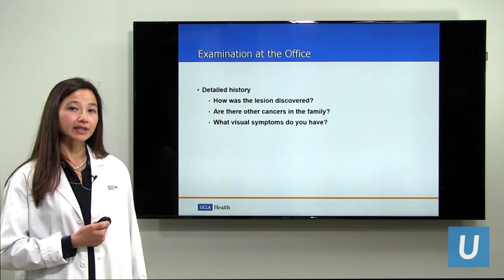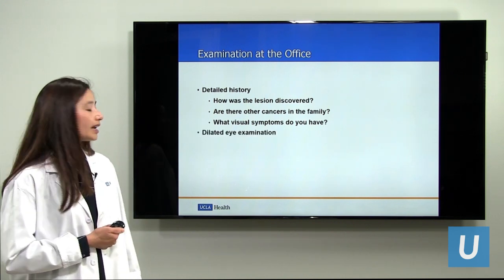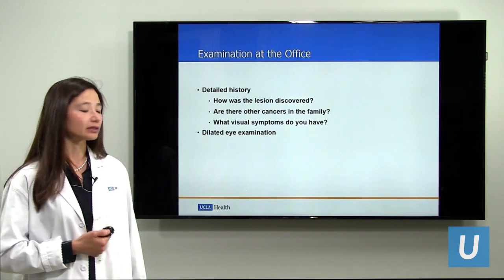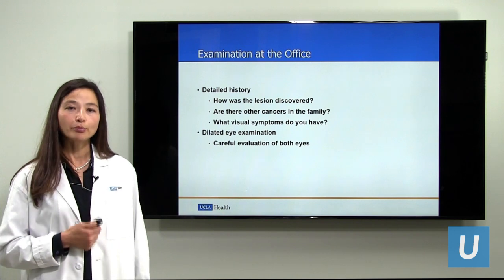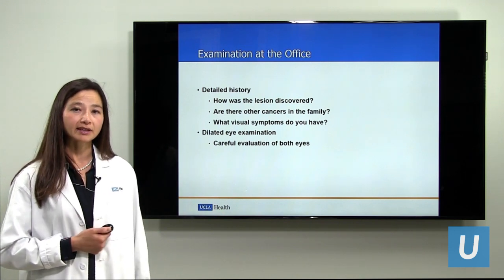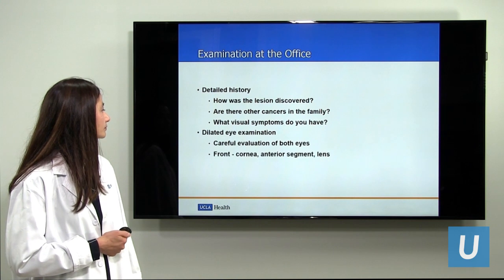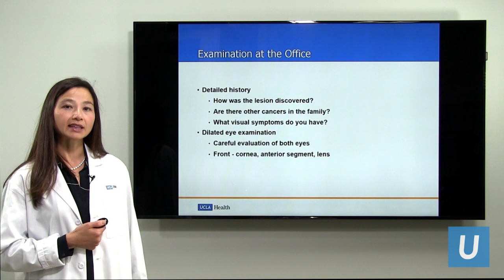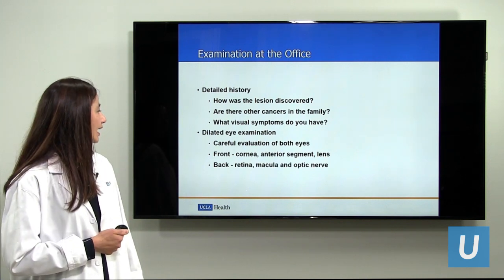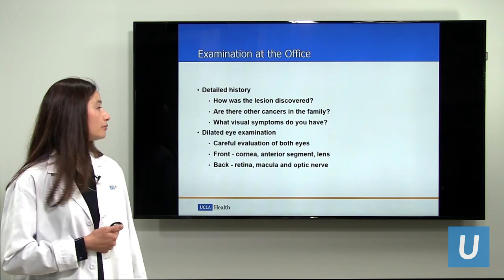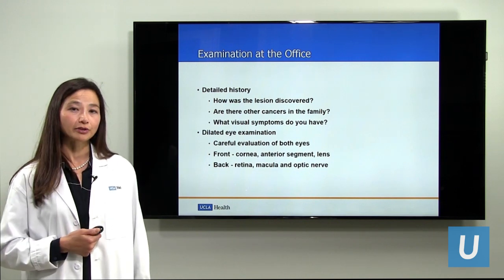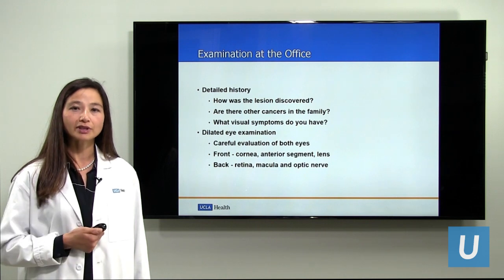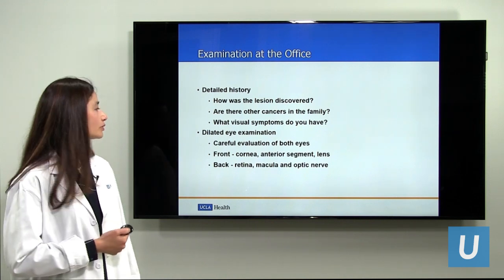After the history, it is important to take a detailed eye examination. We examine both eyes very carefully because both can give us clues. We look at the front of the eye — the cornea, the anterior segment, and the lens — and we look at the back of the eye — the retina, the macula, and the optic nerve. All of these components are important to gather the information needed to come up with the correct diagnosis.